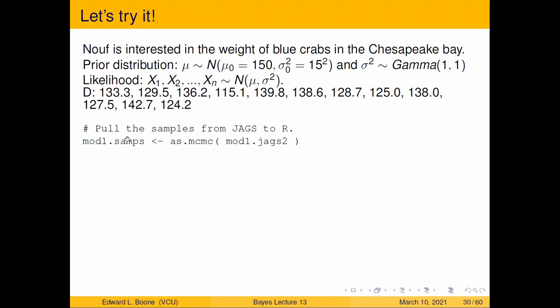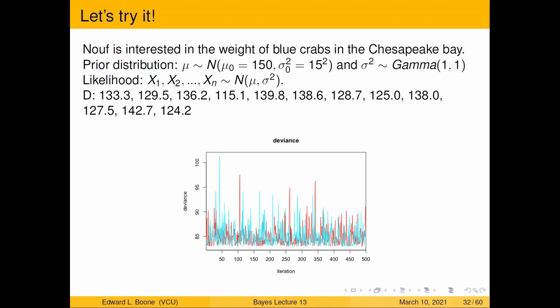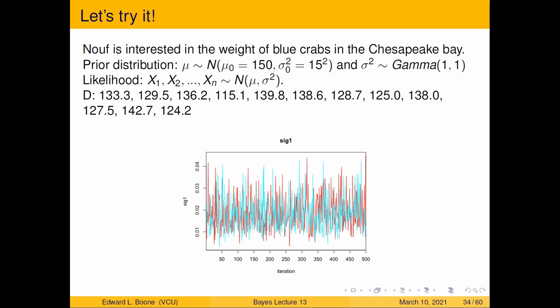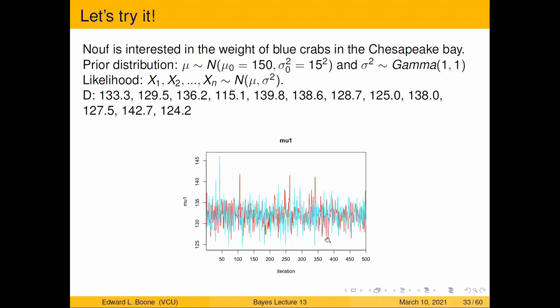The next thing I want to do is pull them back into R. So mod1.samps is as.mcmc(mod1.jags2). This is going to go out and peel the samples off of our JAGS object. Then we're going to want to look at trace plots. A trace plot is basically the samples through time. They should look like fuzzy caterpillars. This one does not look bad at all. What I mean by fuzzy caterpillars: they should be flat but they should be fuzzy, and they shouldn't wander up or wander down. This is a good trace plot.